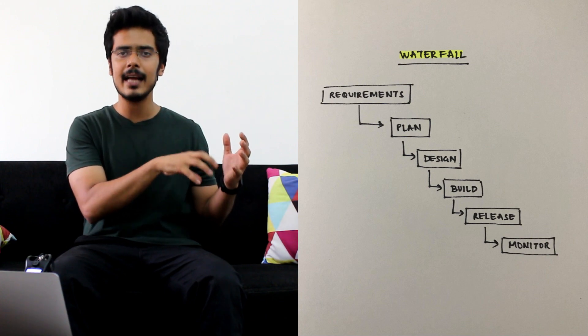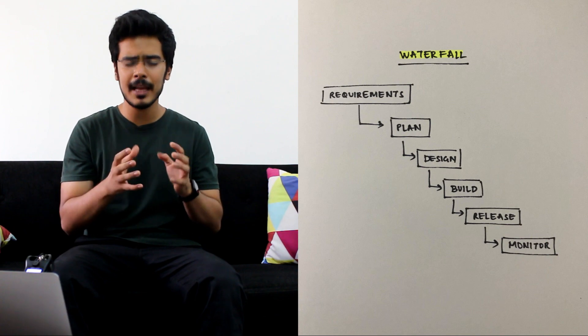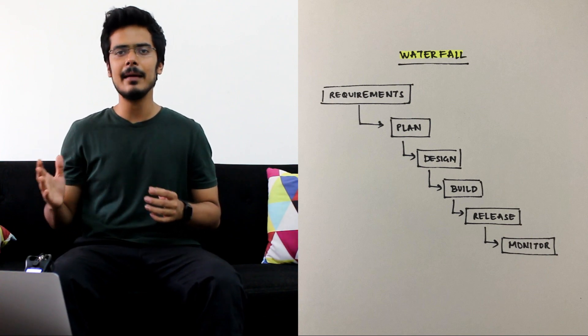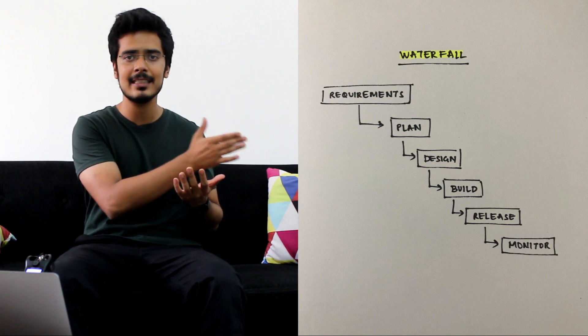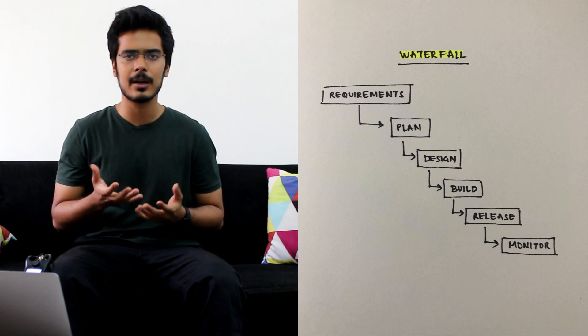So you finish all the requirement gathering for the product once and for all, then you move to planning. You do the planning once and for all, then you move to design. So basically at each of these steps there is no scope of going back and changing the requirements once that process is complete and each of these phases could typically take months to complete.